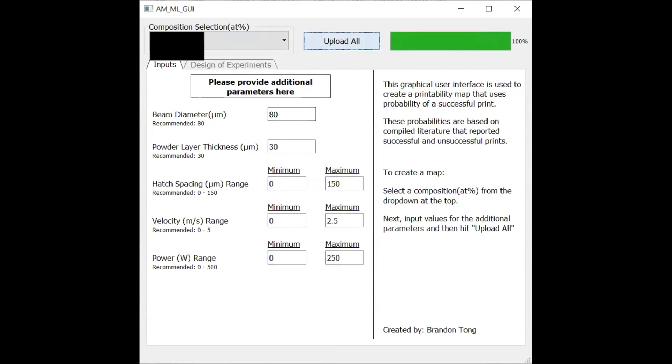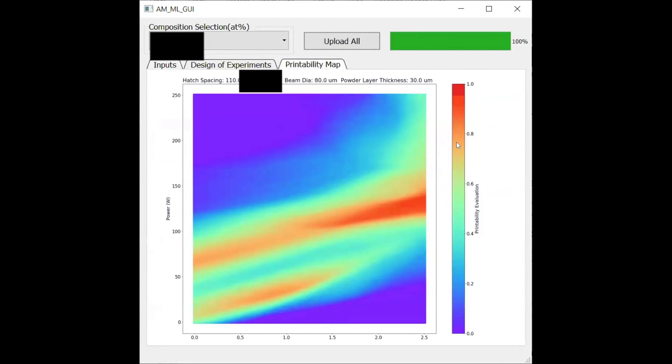Once you press upload all, it feeds those values into the neural network and creates the plot. This is the plot that you saw earlier using the same values.